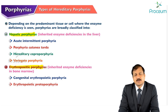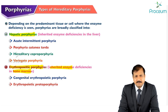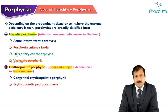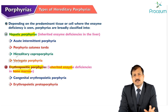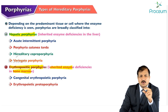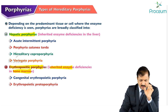Depending on the predominant tissue where the enzyme deficiency is seen, porphyrias can be broadly classified into hepatic porphyrias and erythropoietic porphyrias. Hepatic porphyrias are inherited enzyme deficiencies predominantly in the liver; erythropoietic porphyrias are due to inherited enzyme deficiencies in the bone marrow. Hepatic porphyrias include acute intermittent porphyria, porphyria cutanea tarda, hereditary coproporphyria, and variegate porphyria. Erythropoietic porphyrias include congenital erythropoietic porphyria and erythropoietic protoporphyria.